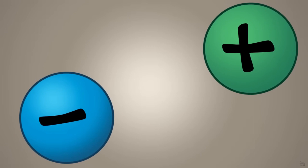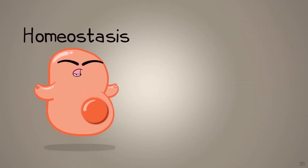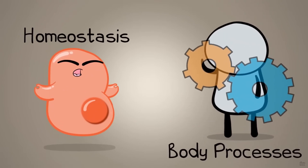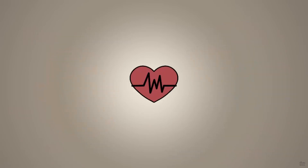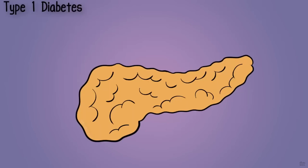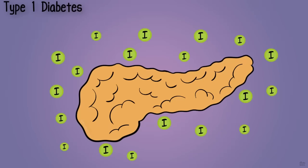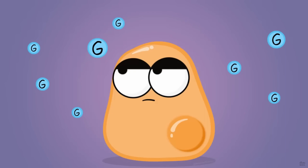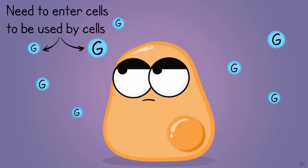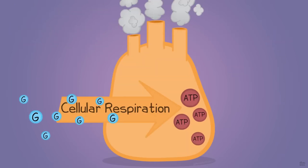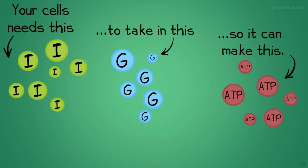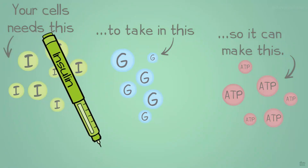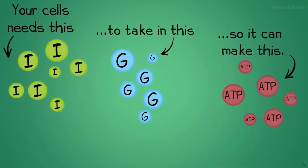Why do we care about feedback? Beyond understanding negative feedback in maintaining homeostasis and positive feedback in body processes, we need to understand what happens when feedback systems fail. For example, in Type 1 diabetes, the pancreas doesn't produce insulin correctly. Without insulin, glucose cannot enter the cells, so it can't be used in cellular respiration to make ATP. Many Type 1 diabetics need to give themselves insulin and monitor their blood sugar because the negative feedback may not work as it should.